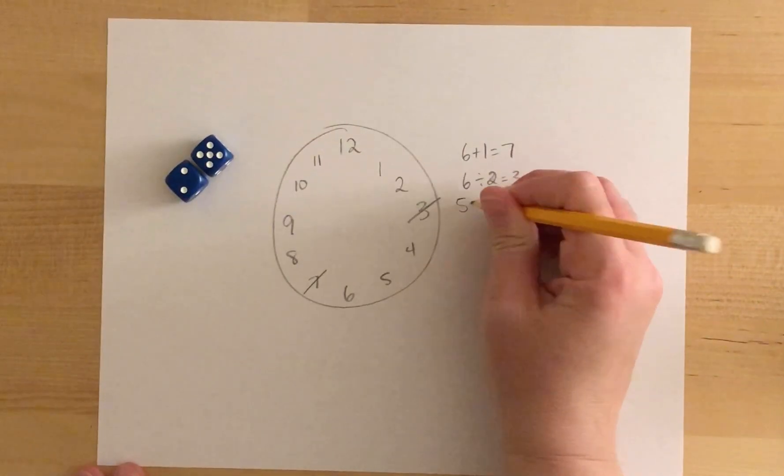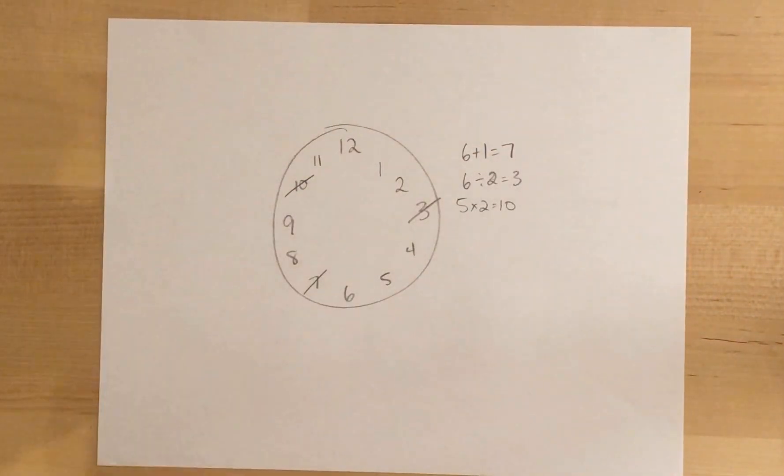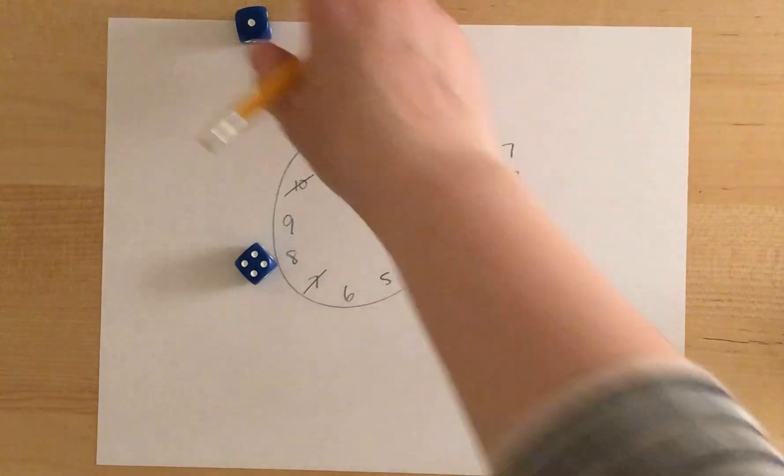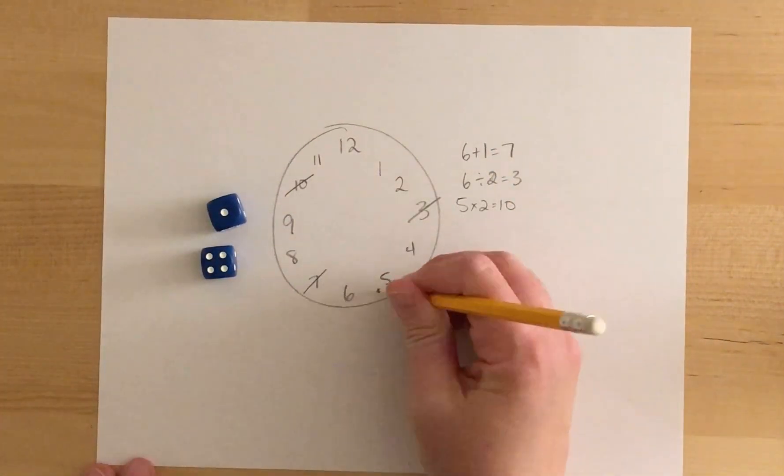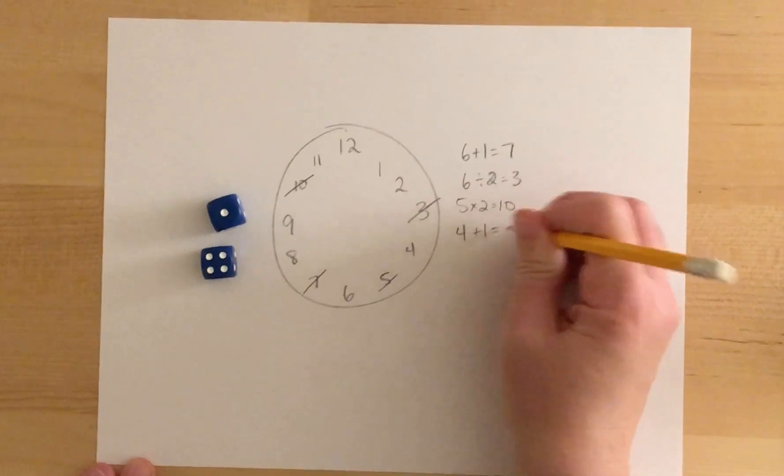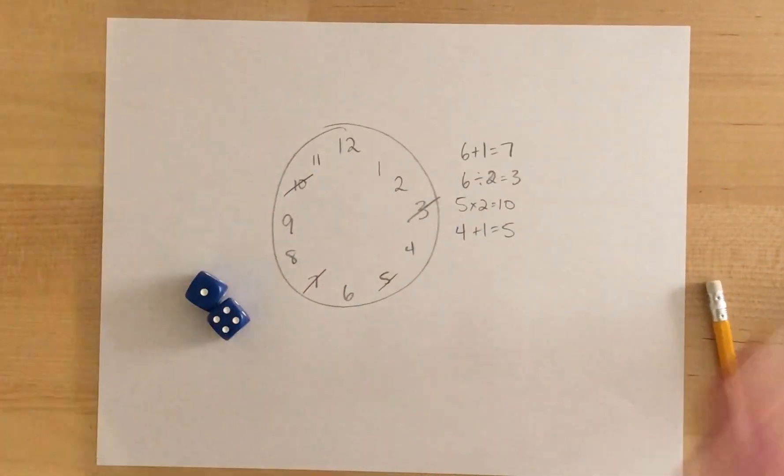Again, if you were working with young children, you just wouldn't do the multiplication or division. 4 and 1 makes 5, and this just keeps going until you have your entire clock crossed out.